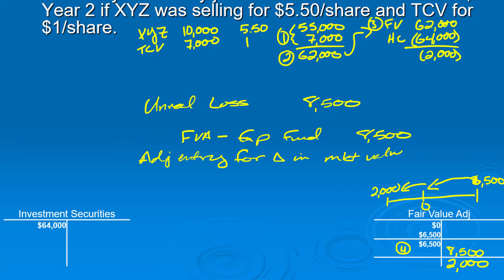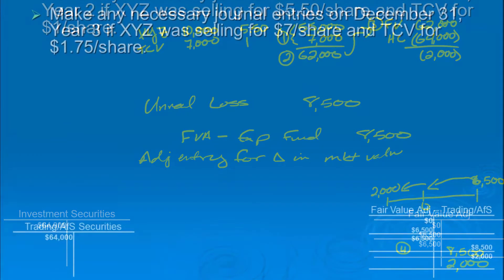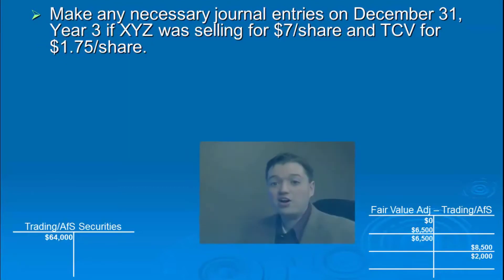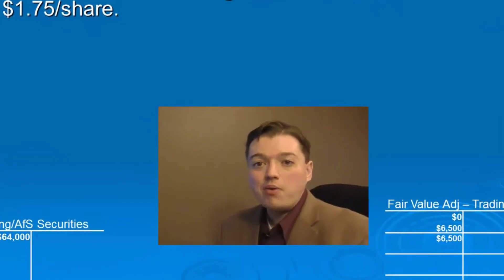Once you get this process down, you can see it really is straightforward and simple. Now I'd like you to work on Year 3 on your own — XYZ is now selling for $7 a share and TCV is at $1.75. Make the journal entries, and when we come back we'll review that entry and then pick up with what happens when we sell off part of our portfolio.